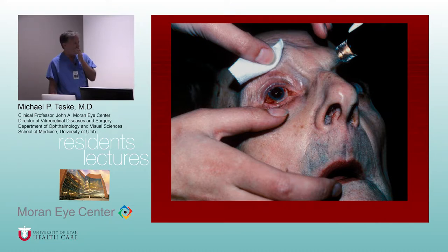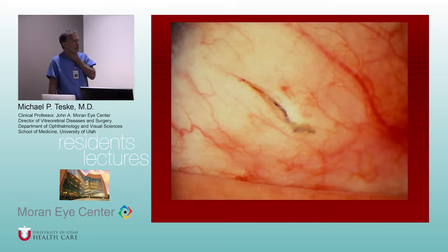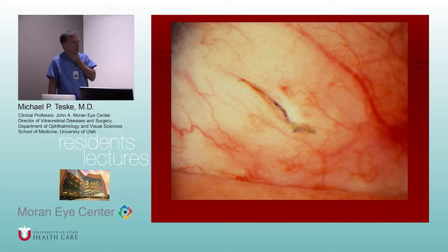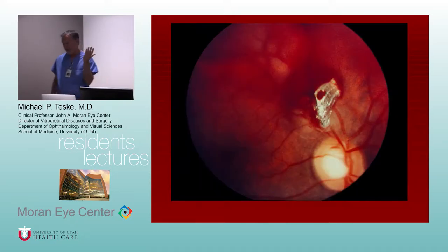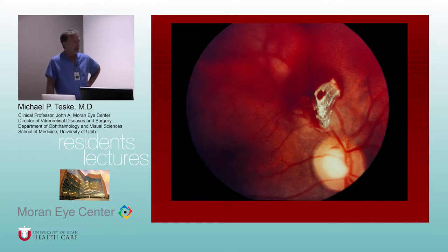Sometimes you can tell if an eye is open or closed just by a quick look; other times it's more subtle. On slit lamp, there may not be a lot of subconjunctival hemorrhage, but you can see a laceration in the sclera — an open eye situation — which may not be obvious unless you do a slit lamp exam. It's always nice to do a dilated exam; you'll find things you may not suspect.